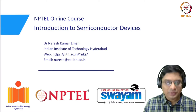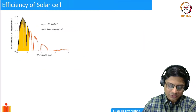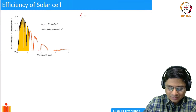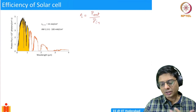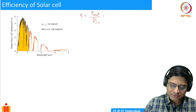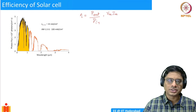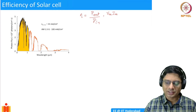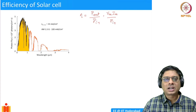Today we will talk about the efficiency of a solar cell. Efficiency eta is defined as the maximum power output of a solar cell divided by the power input. The maximum power output is Vm times Im — the maximum current and maximum voltage at the maximum power point, which we defined in the last video.